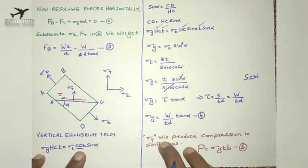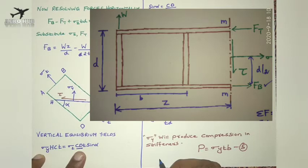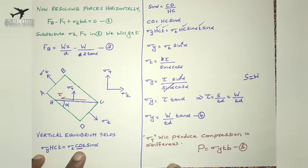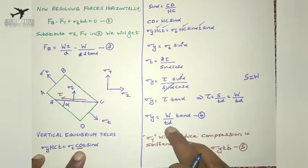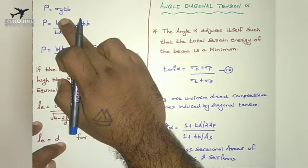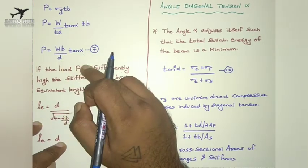Sigma_y produces compression in the stiffeners. The compressive load P is given by P = sigma_y * t * b, where t is the thickness and b is the width over which the vertical stiffeners are arranged. Substituting sigma_y = w/(td) * tan(α): P = w*b/d * tan(α). This is the equation to find the compressive load acting on the stiffeners.